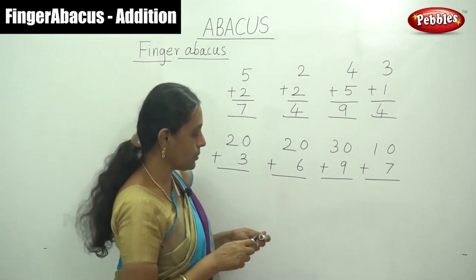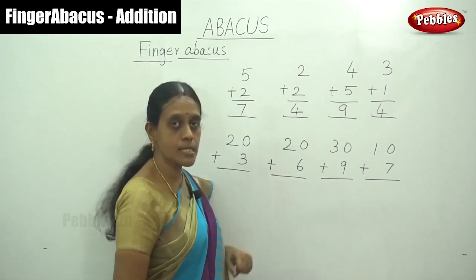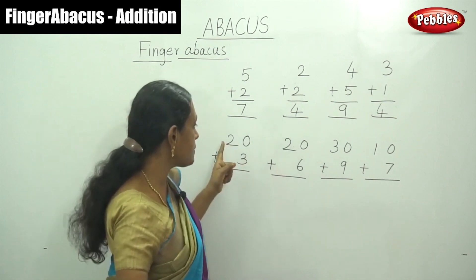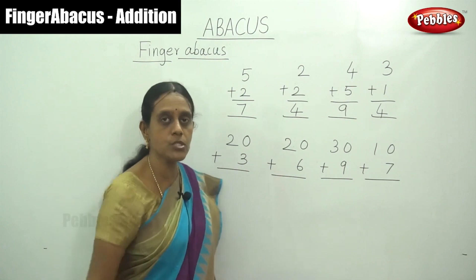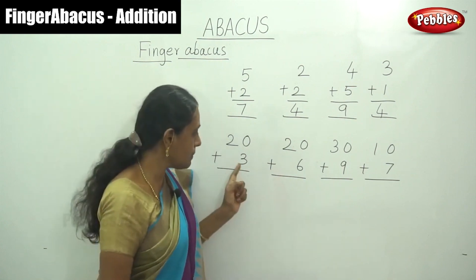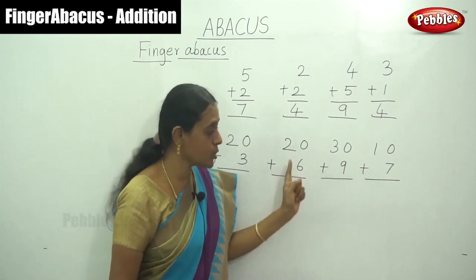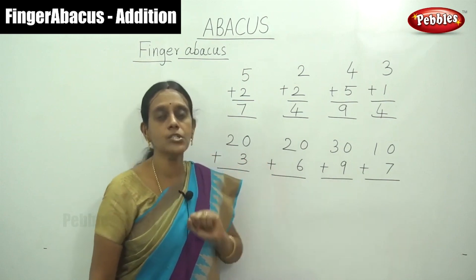How to do this? Observe this question. First addition, that is first number is the 2 digit number. It has 1s place and 10s place. And the next number, each number is a single digit number.